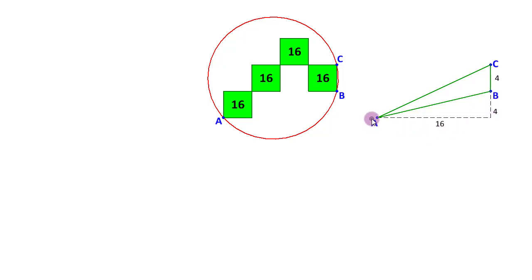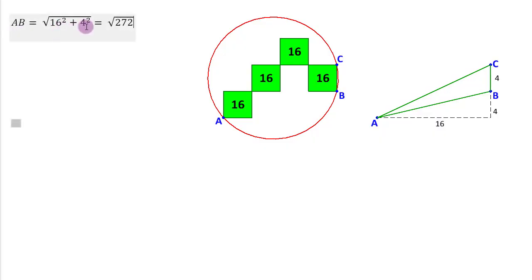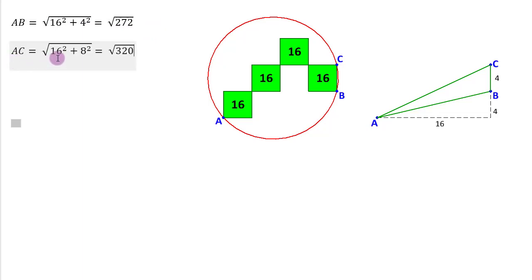That helps us calculate the lengths AB as well as AC. AB will be √(16² + 4²), which is √272. AC would be √(16² + 8²), giving us √320. Now knowing the three sides of this triangle, we can calculate the angle.